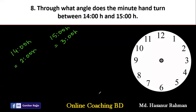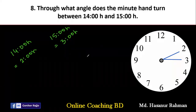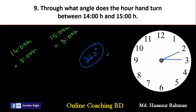From 2 to 3 is one full hour. When the hour hand moves from 2 to 3, the minute hand completes a whole revolution — 360 degrees. So between 14 hours and 15 hours, the minute hand creates a 360-degree angle. In one hour, the minute hand always creates 360 degrees.